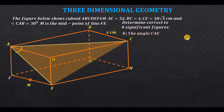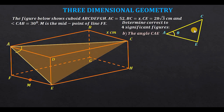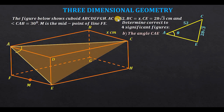Extracting triangle ACE, we are required to determine angle theta. For this triangle we are given CE = 28√3, and we also know AC = 52. At this point we are going to apply the cosine rule, because this is not a right-angle triangle and we will not use SOHCAHTOA.